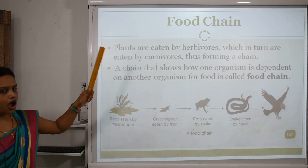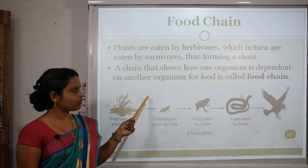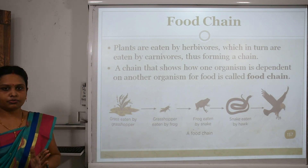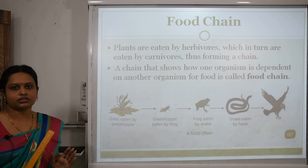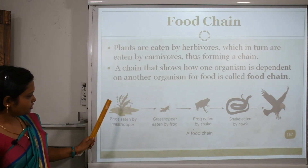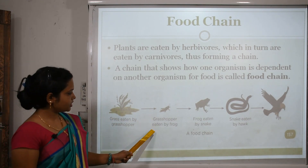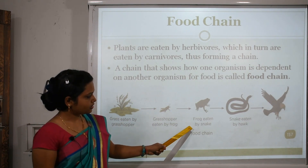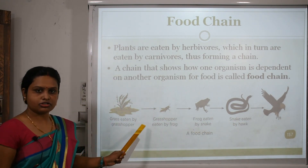A chain that shows how one organism is dependent on another organism for food is called a food chain. See this diagram of a food chain: grass is eaten by a grasshopper, the grasshopper is eaten by a frog, the frog is eaten by a snake, and the snake is eaten by a hawk. This is a food chain.